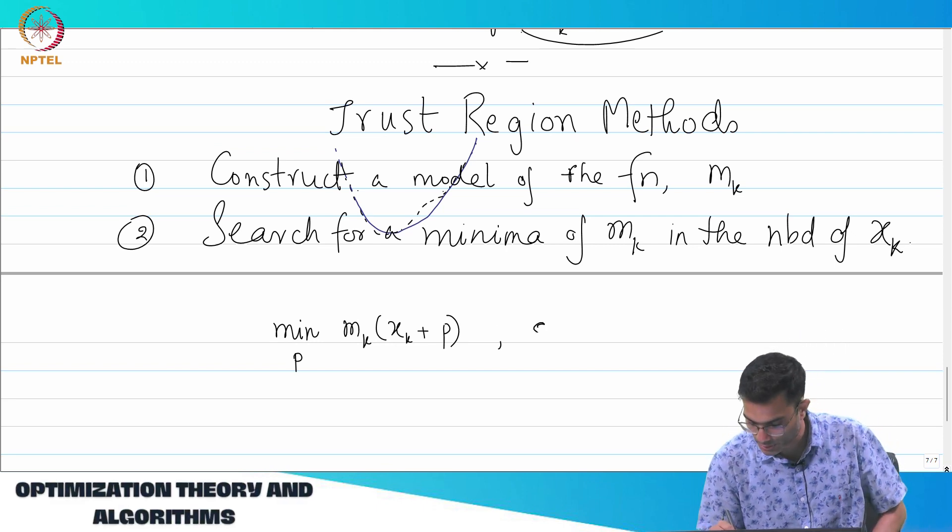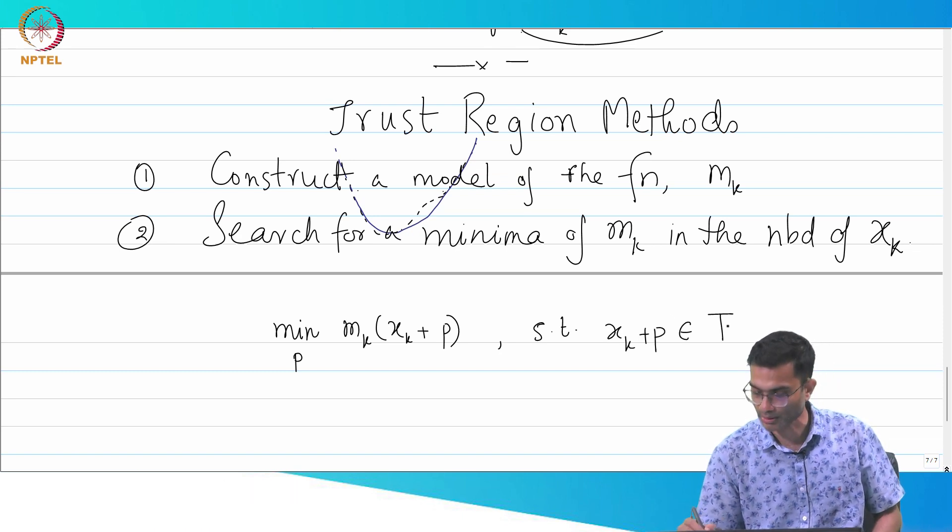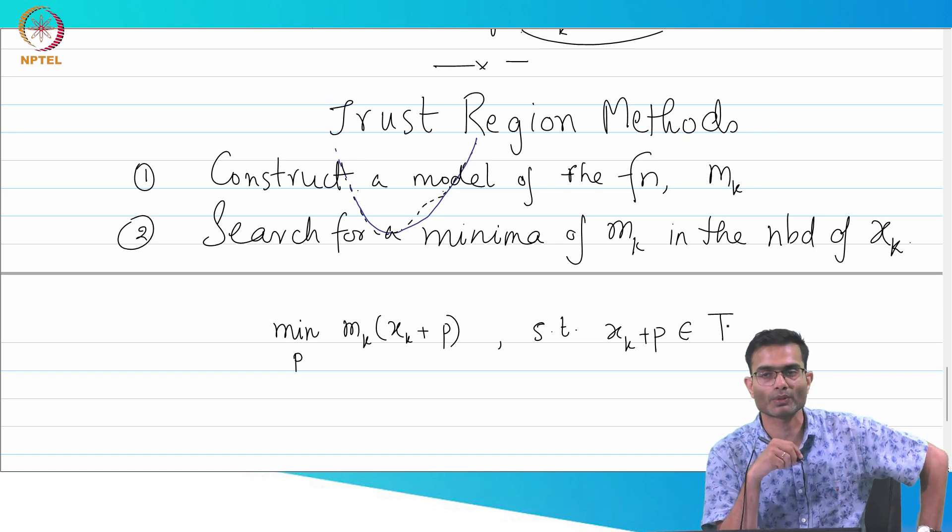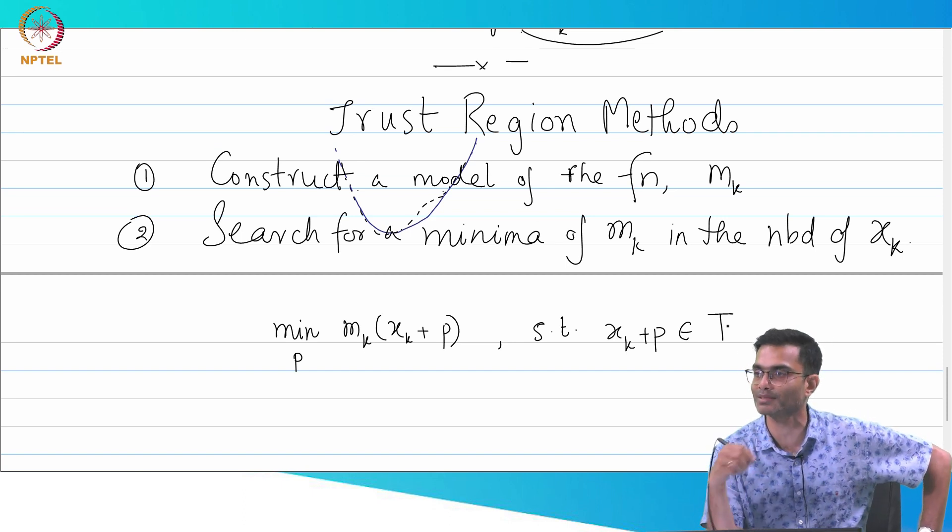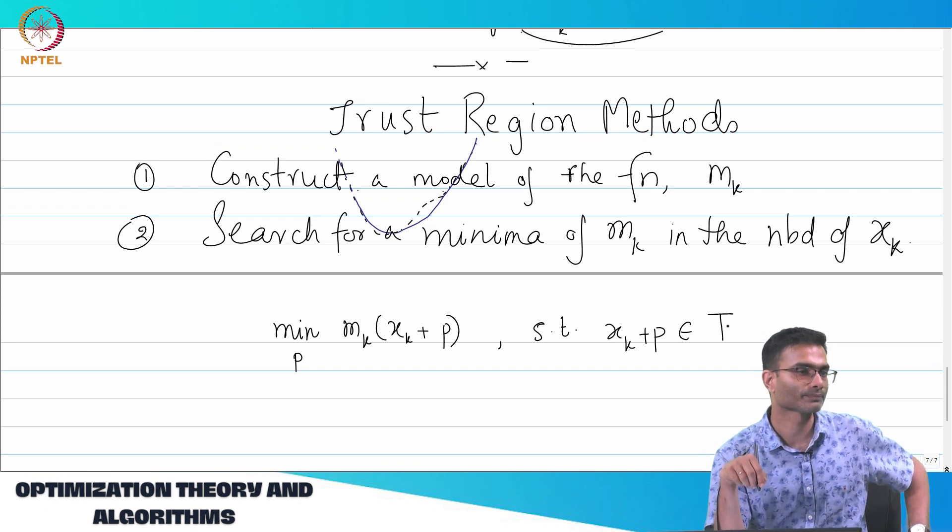So what I will do is such that xk + p, this belongs to some trust region T. That is where the word trust region comes. Trust means I trust the model in that region and I hunt for p's in that region.